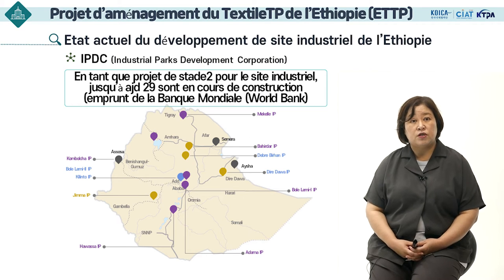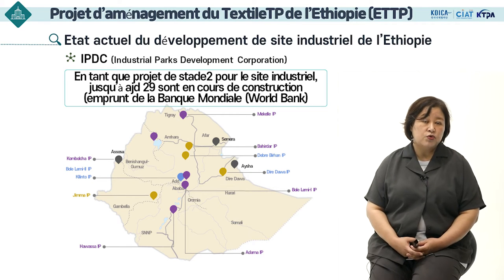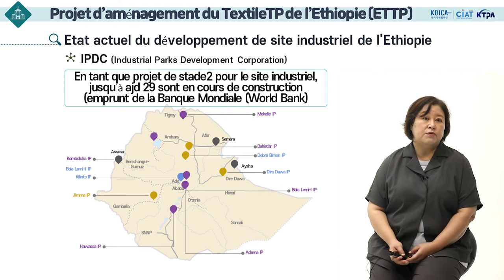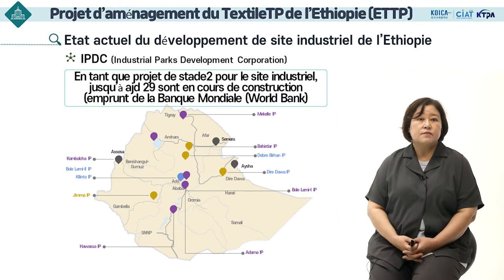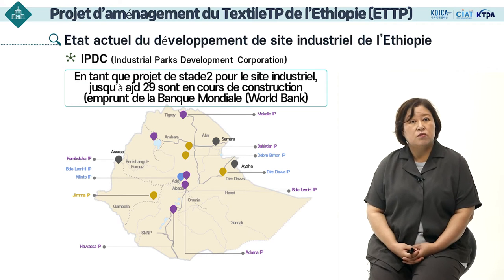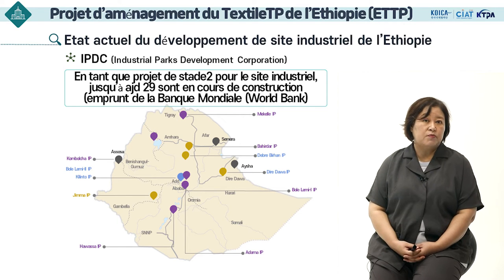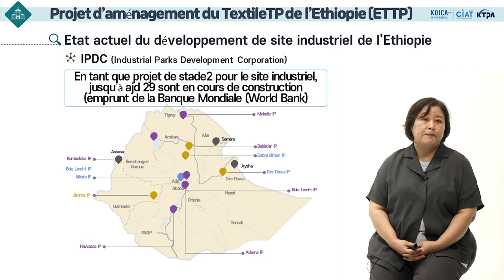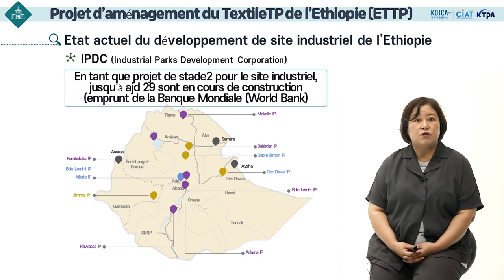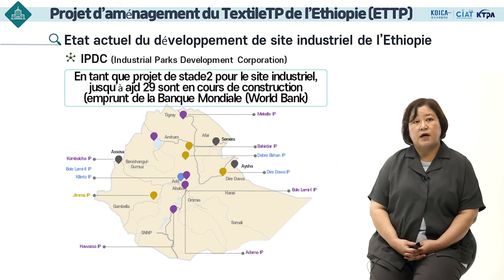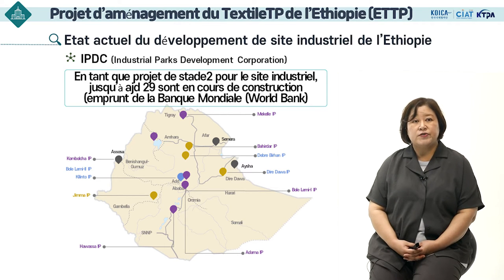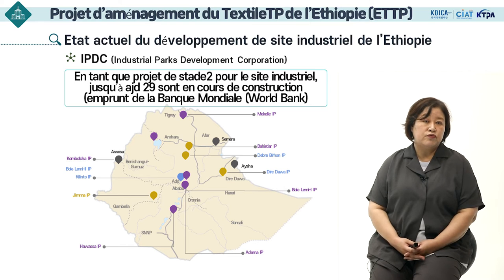Après la construction des 11 sites industriels, il se trouve maintenant un projet de construction de sites industriels du stade 2. Il existe une société de développement de sites industriels appelée IPDC (Industrial Parks Development Corporation). En combinant les projets de stade 1 et 2, 29 sites industriels sont en cours de construction dans le territoire éthiopien, avec de nombreux projets d'infrastructures de base tels que les voies ferrées et les routes afin de résoudre les difficultés liées à la logistique.